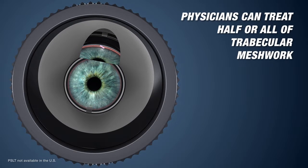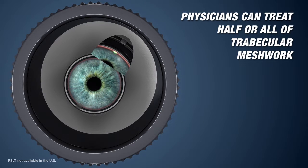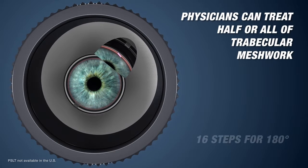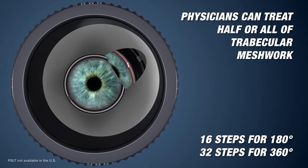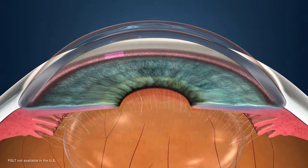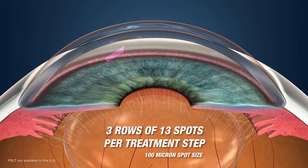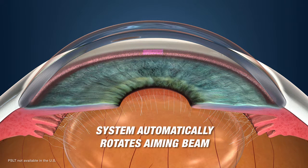Physicians can choose to treat either half or all of the trabecular meshwork. Treatment is administered in 16 steps for 180 degrees, or 32 steps for 360 degrees. There are 3 rows of 13 spots per treatment step, and the system automatically rotates the aiming beam pattern, allowing for precise and accurate alignment and delivery of the treatment patterns onto the trabecular meshwork.